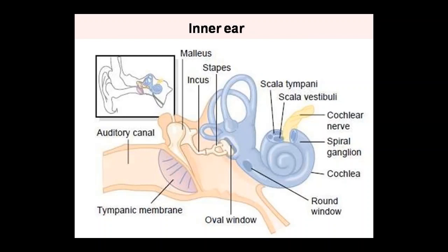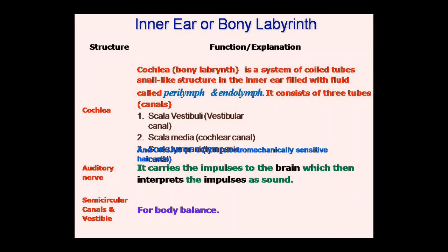The vestibule is shown in the diagram. Look at this blue diagram. Scala tympani is shown. Scala vestibuli is shown. The yellow cochlea nerve is shown in the diagram. Spiral ganglions are shown. This is the main structure of the cochlea. The round window is shown and the oval window is also shown — which we covered in our last class. So this is the inner ear, or what we call the bony labyrinth, showing cochlea, auditory nerve, semi-circular canals and vestibule.